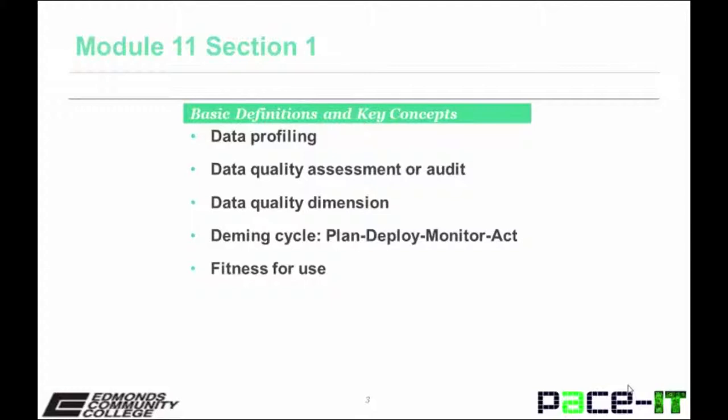Data quality dimension or characteristic is one that can be measured, for example: accuracy, completeness, consistency, currency, precision, privacy, reasonableness, referential integrity, timeliness, uniqueness, or validity.